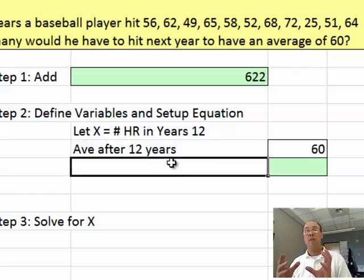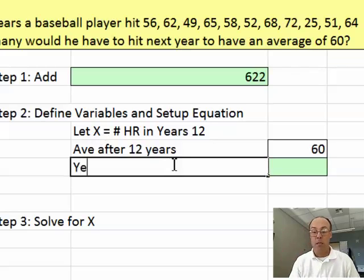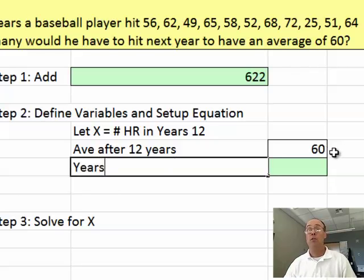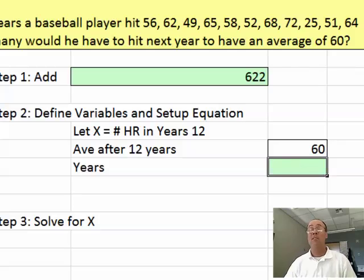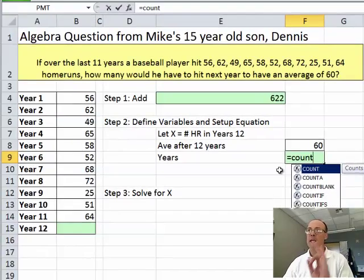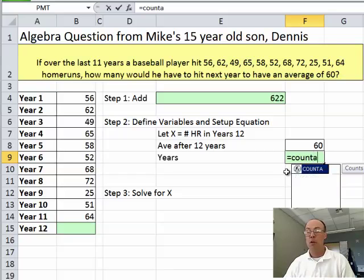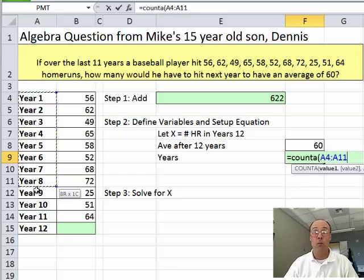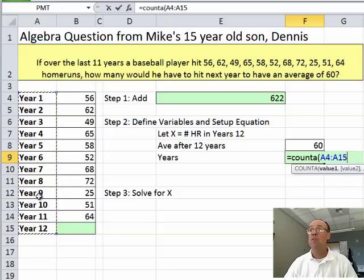All right. So we have an X and a 622, but we're going to need a few other things for our equation, like this 60. That's given, right? So 60 is average after 12 years, and I'm just going to type this in. Finally, we need this as an average, right? Add them all up, divide by the count. So we need the count, which is going to be years, the total count, including that year 12. So that's 12. I could either type this in or I could get tricky here.